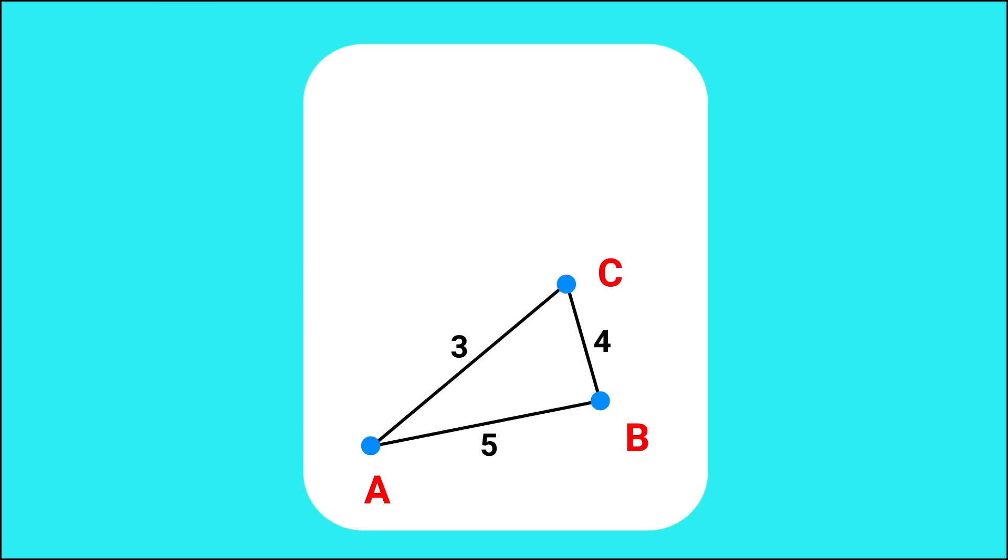But this immediately makes no sense. Not only the scale, but we already said that the closest point to A is B, that's why that connecting edge was drawn. Clearly, C is closer, at only a distance of 3.